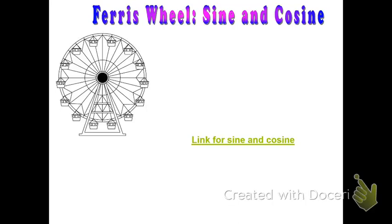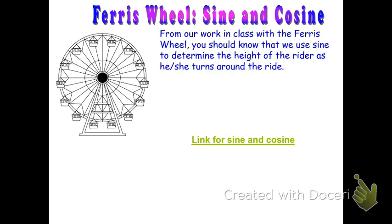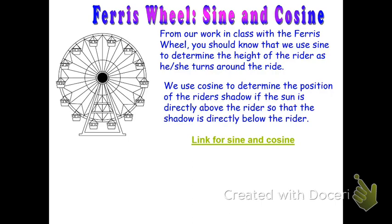In this video we'll review the ferris wheel and how we can use the sine and cosine functions to find the height of the rider and the rider's shadow position. Sine is used to measure the height of the rider as he or she turns around the ride, and cosine is used to measure the position of the rider's shadow if the sun is directly above — meaning the shadow is directly below. We'll call that the high noon shadow.